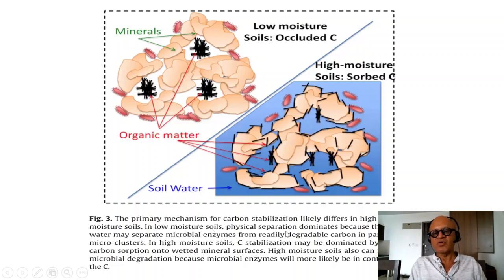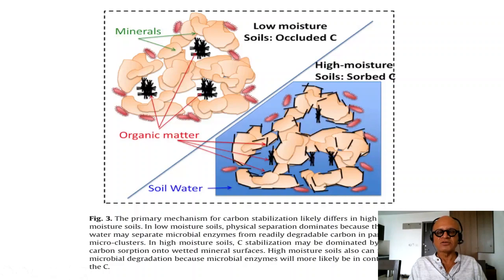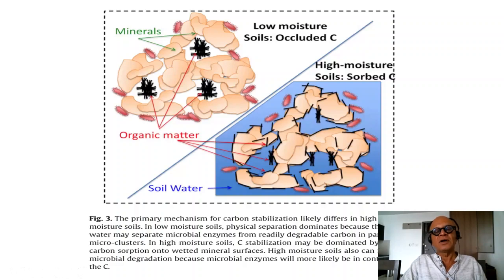In low moisture soils, physical separation dominates because the lack of water may separate microbial enzymes from readily degradable carbon in particles or microclusters. In high moisture soils, carbon stabilization may be dominated by organic carbon sorption onto wetted mineral surfaces. High moisture soils also facilitate microbial degradation because microbial enzymes will more likely be in contact with the carbon, which obviously changes the CO2 and broader biogeochemical cycle.